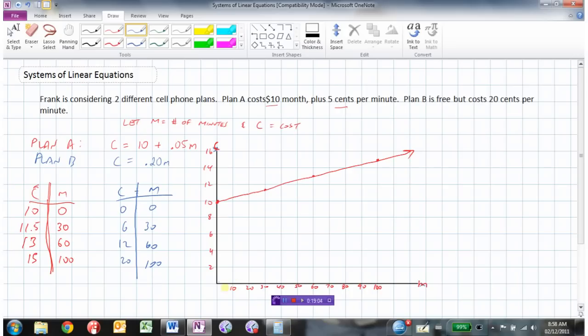So plotting these points, 0, 0. 30 would be 6. 60 would be 12. And 100 would be 20, so up to here.